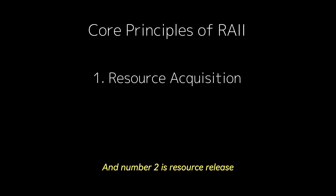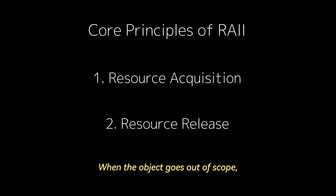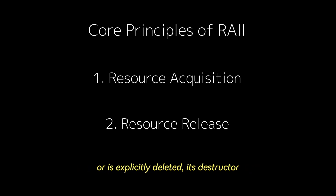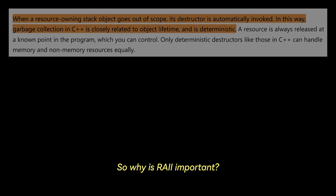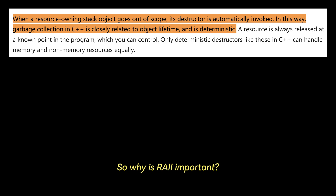And number two is resource release. When the object goes out of scope — typically when it goes out of the current function's scope or is explicitly deleted — its destructor automatically releases any resources it holds. For example, when the object is destroyed, it closes the file or frees the memory.